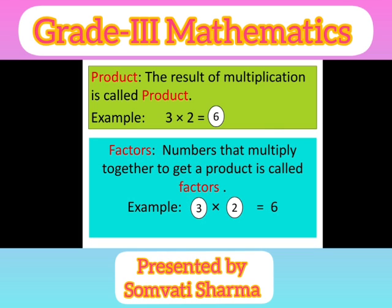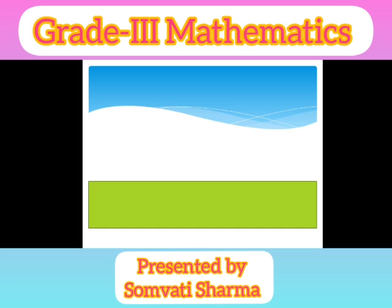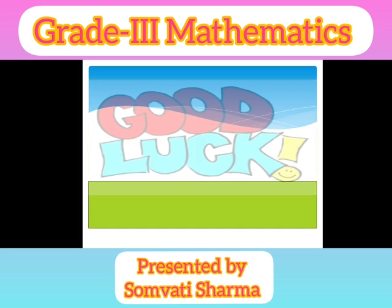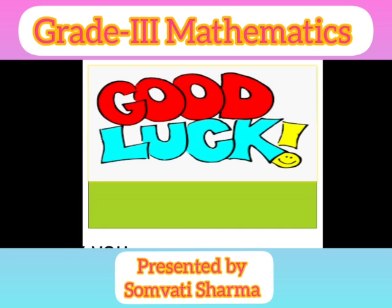Factors — numbers that multiply together to get a product are called factors. So, 3 into 2 is equal to 6, meaning 3 and 2 are the factors of 6. Good luck, thank you, bye.